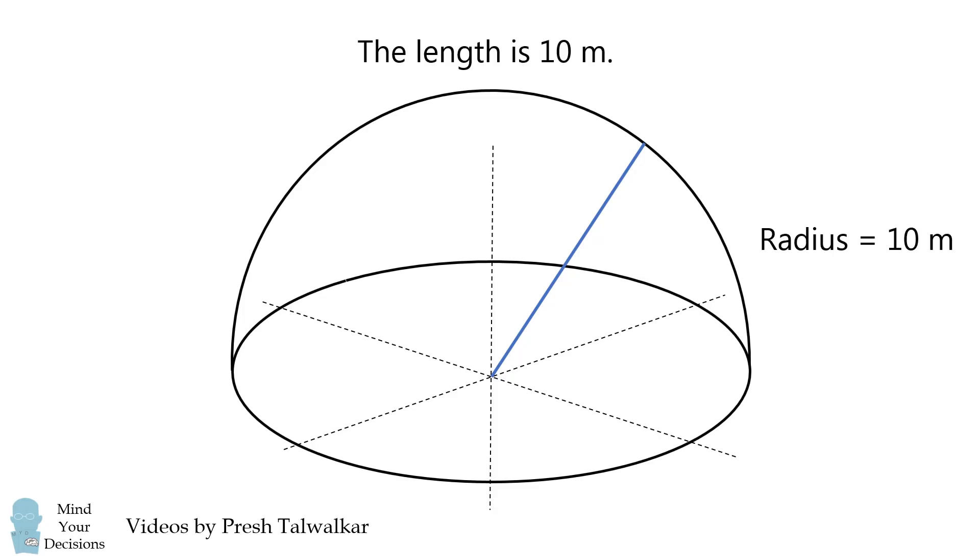Therefore, the length of this line and the green line is 10 meters and it's that simple if you think inside the box.